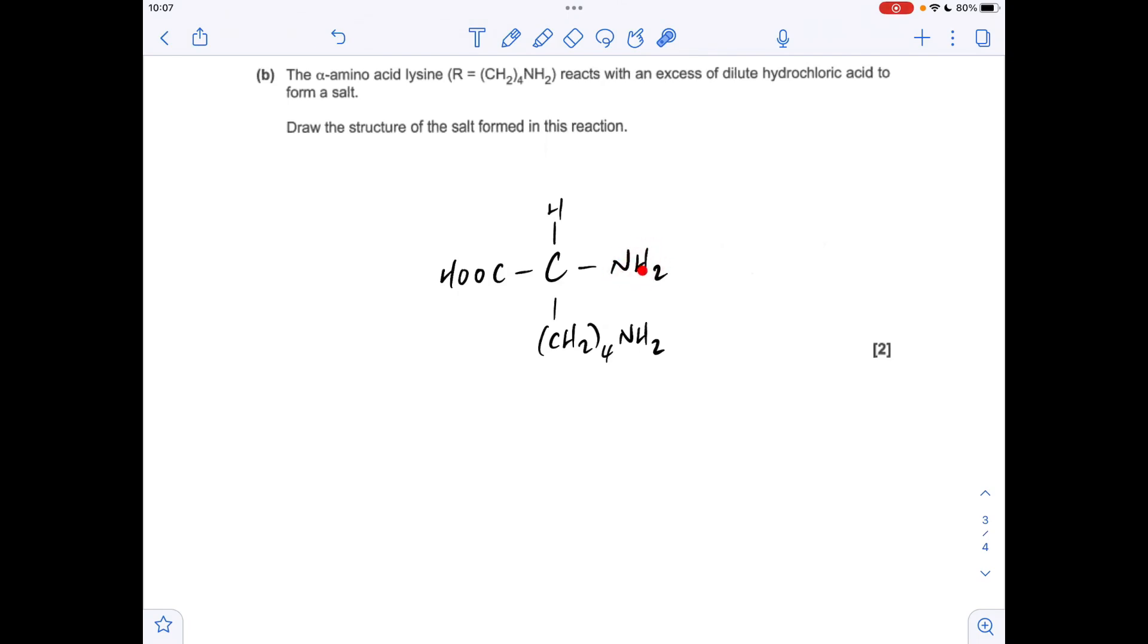So remember, it's the amino group that can react with an acid, can accept the H+ from the acid and become an ammonium ion. So because we've got an excess of dilute hydrochloric acid, we can do that to both NH2 groups. But it specifically asks for the salt, so we need to put the chloride ion in as well. So the answer is that. If you haven't put the charges in, that's fine. NH3Cl is okay.